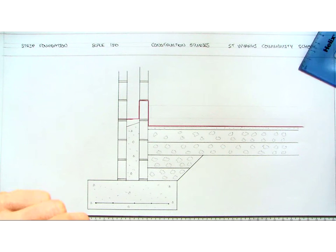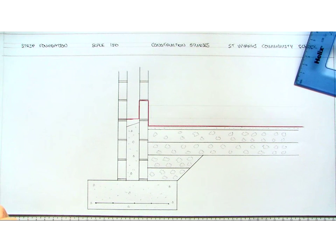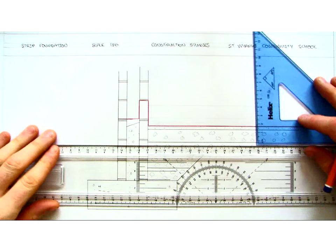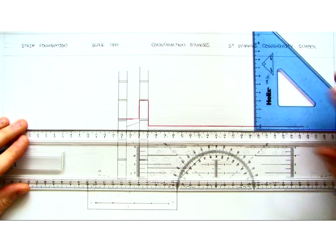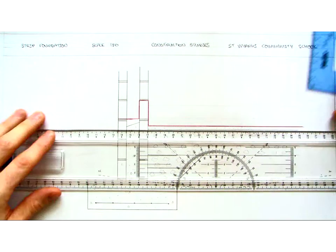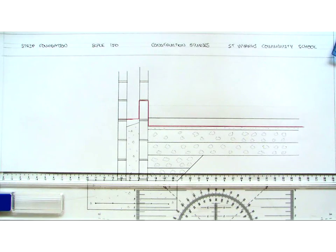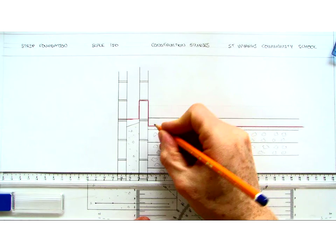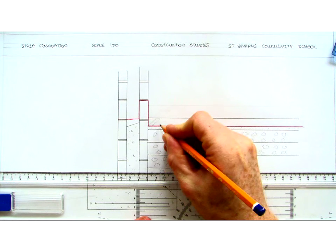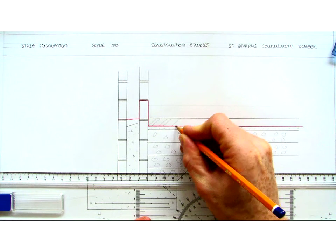Directly on top of the radon barrier we are going to place our insulation. So it is 100mm insulation. We make our mark on top of that and draw our line in. Again with insulation we indicate with angled lines like so.